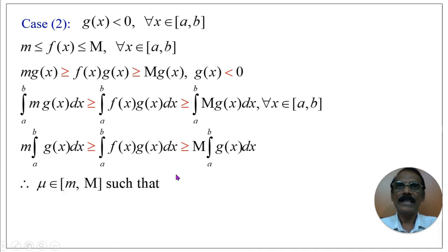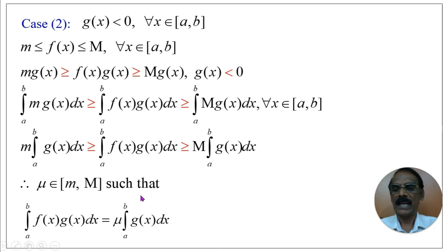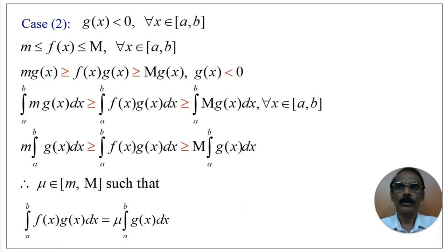As discussed in Case 1, therefore μ belongs to the closed interval [m, M] such that ∫[a to b] f(x)g(x) dx = μ·∫[a to b] g(x) dx. Therefore, the statement is true for both g(x) ≥ 0 and g(x) < 0. This completes the proof.